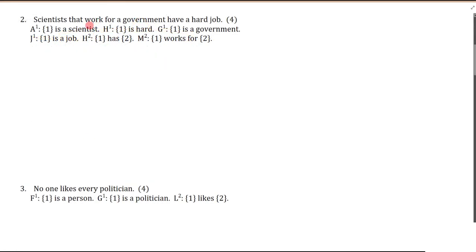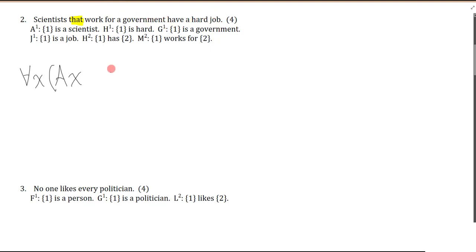Question two: Scientists that work for a government have a hard job. The key word is 'that,' so we're using a restrictive clause — 'work for a government' is part of the property of scientists. This is straightforward predicate symbolization with multi-place predicates. Am I talking about all scientists? Yes — so: for everything, if you're a scientist, and you work for a government, then you have a hard job.